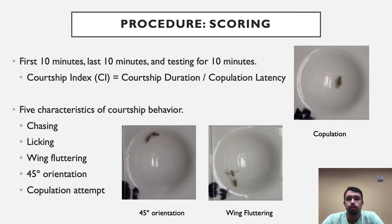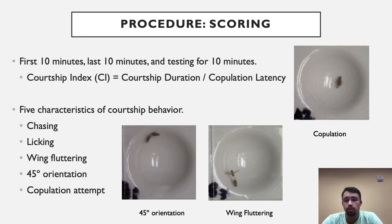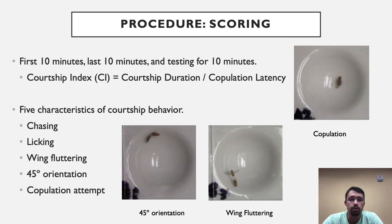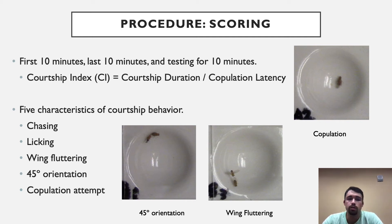When scoring the flies' courtship behavior, we looked at the first 10 minutes of training, the last 10 minutes of training, and the 10 minutes allowed for testing. We recorded the amount of time it took for the flies to start courting, the amount of their courtship duration, their copulation latency time, and whether they mated or not. The flies were given a courtship index value, calculated as courtship duration divided by copulation latency, with all units in seconds. The five characteristics used to score courtship duration are: chasing, licking, wing fluttering, the 45-degree orientation of the male fly to the female fly, and a copulation attempt.